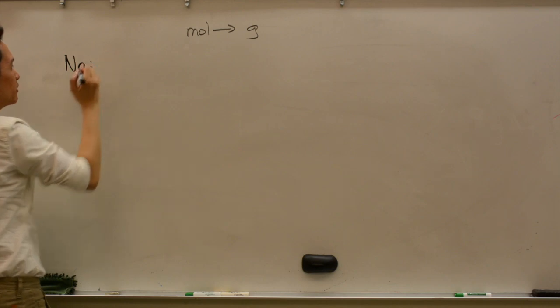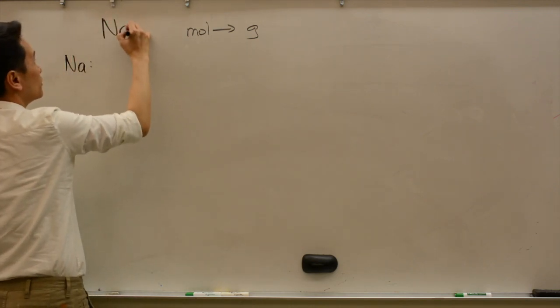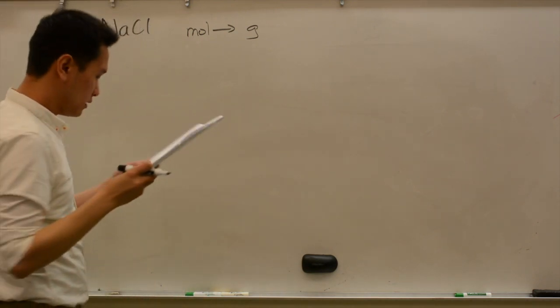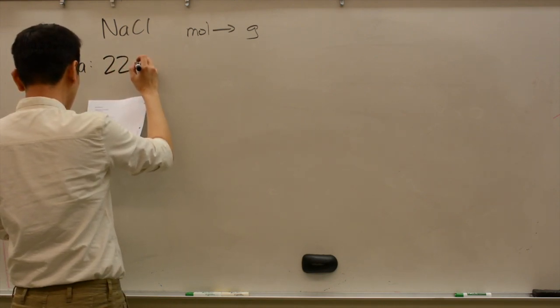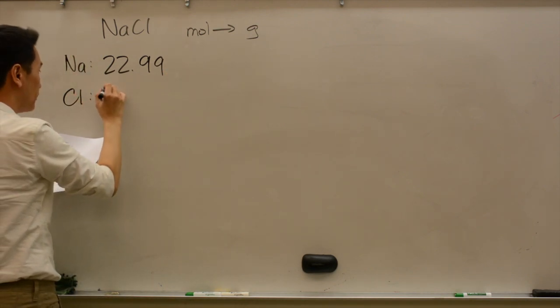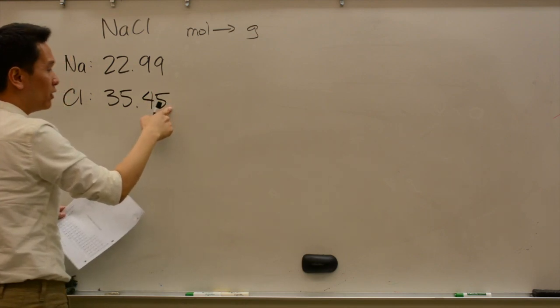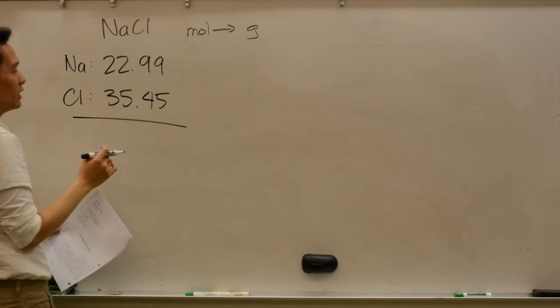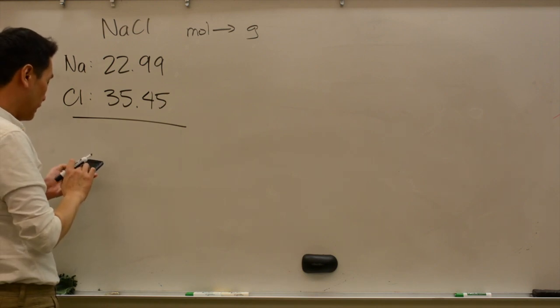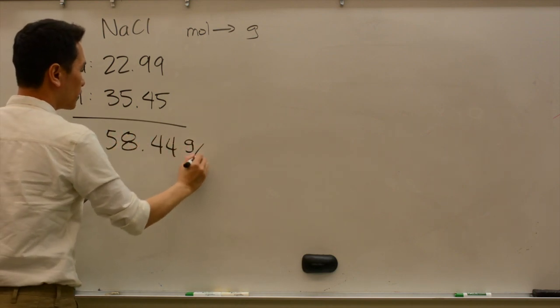The molar mass of sodium chloride - there's one sodium for every one chloride. Each sodium is 22.99 grams per mole, and chloride is 35.45 grams per mole. So you add them up, because that's how you're going to get the total of the entire molecule. So that's 22.99 plus 35.45 gives me 58.44 grams per mole.